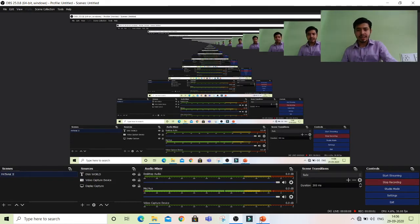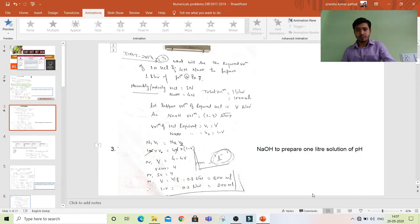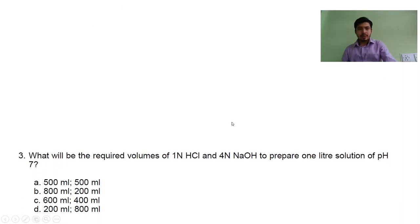Welcome back. I will solve another question from the 2017 paper. The question asks: What will be the required volume of 1 normal HCl and 4 normal NaOH to prepare one liter solution at pH 7?